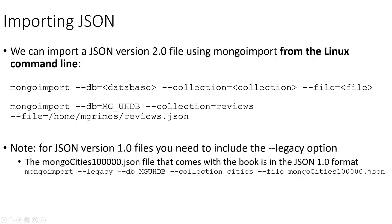If you have an older style JSON file, you just need to add one extra argument to the mongoimport command: --legacy. That will allow mongoimport to import a JSON version 1.0 file. If you're downloading the datasets that come with the 'Seven Databases in Seven Weeks' book, note that the mongo-cities100000.json file is the older version, so you'll need to import it using this legacy flag.